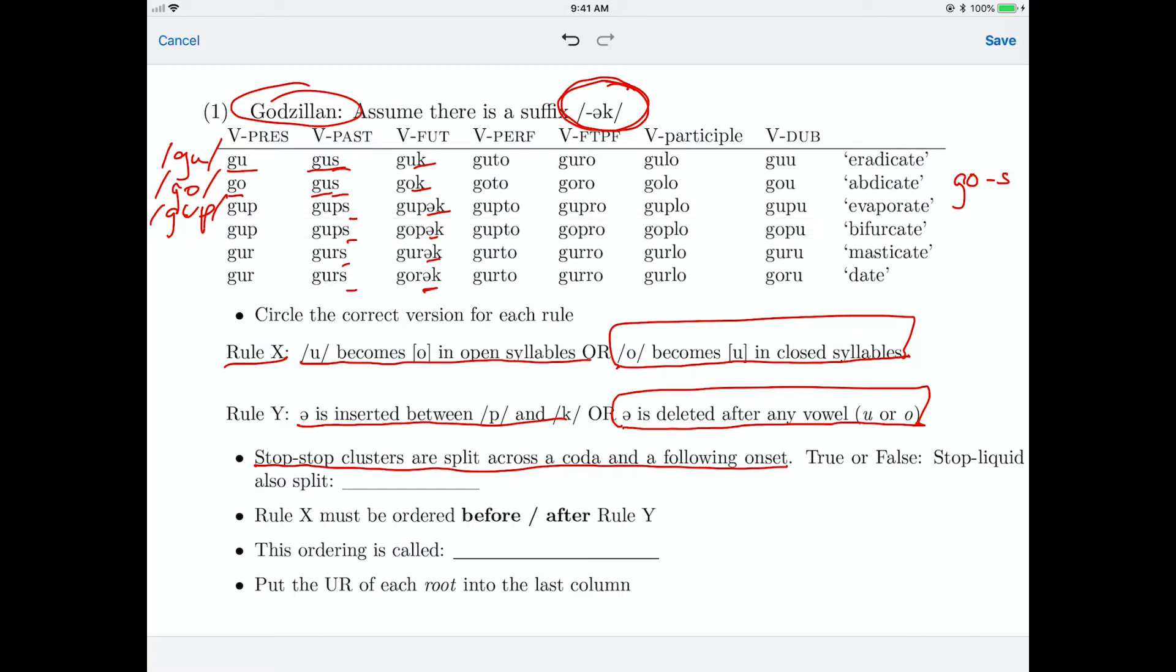That's not going to tell us anything. But here, we sometimes have g-u-p, and sometimes g-o-p. And we know that it's got to have an underlying o. It's got to be different from the previous one. And there's a rule that o becomes u in closed syllables. So we know that this syllable must be closed here. That o must become a u here, because the syllable is closed.